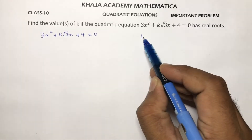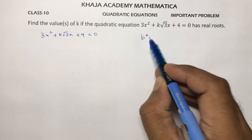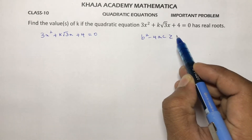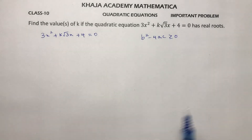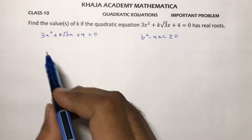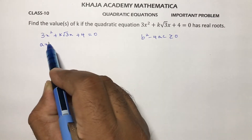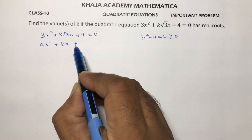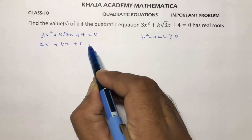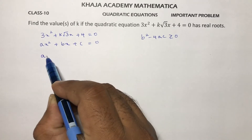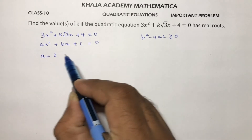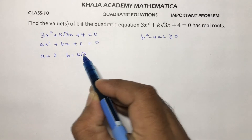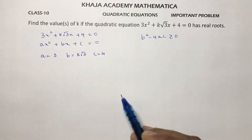For real roots, the condition is b² - 4ac ≥ 0. Comparing with the standard quadratic equation ax² + bx + c = 0, the value of a is 3, b is k√3, and c is 4.